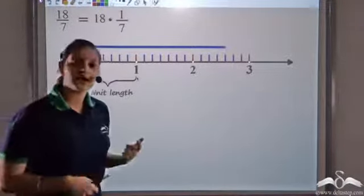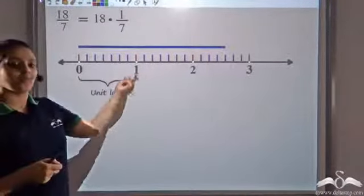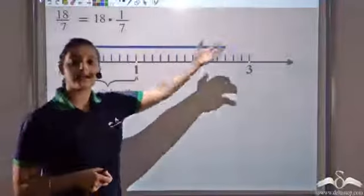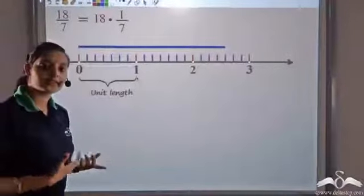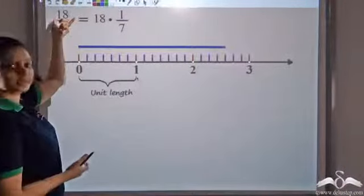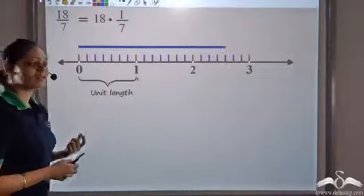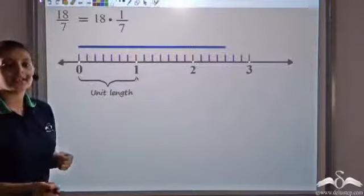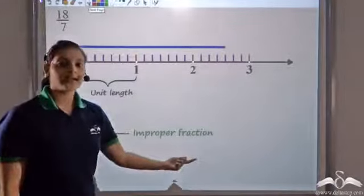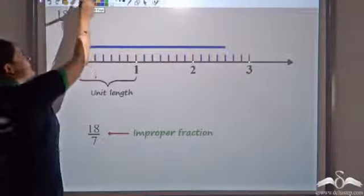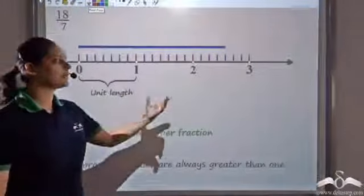So far we had seen that fractions were numbers less than one. But here you see that eighteen by seven is actually greater than one — and not just one, greater than two also. The difference is that the numerator, which is eighteen, is a much larger number than the denominator. Whenever the numerator is greater than the denominator, I call that fraction an improper fraction. And an improper fraction would always be greater than one.